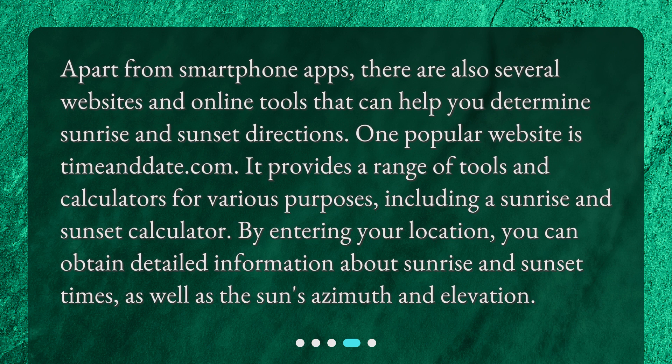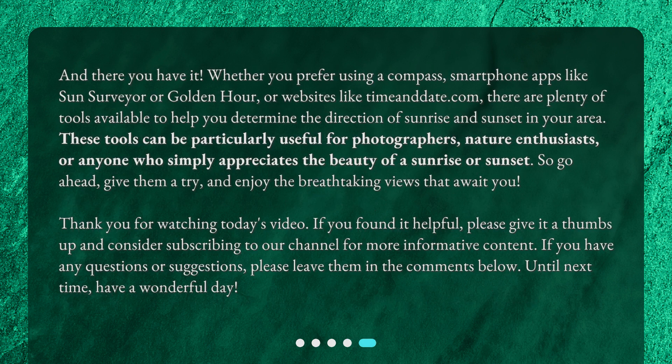Apart from smartphone apps, there are also several websites and online tools that can help you determine sunrise and sunset directions. One popular website is timeanddate.com. It provides a range of tools and calculators for various purposes, including a sunrise and sunset calculator. By entering your location, you can obtain detailed information about sunrise and sunset times, as well as the sun's azimuth and elevation.